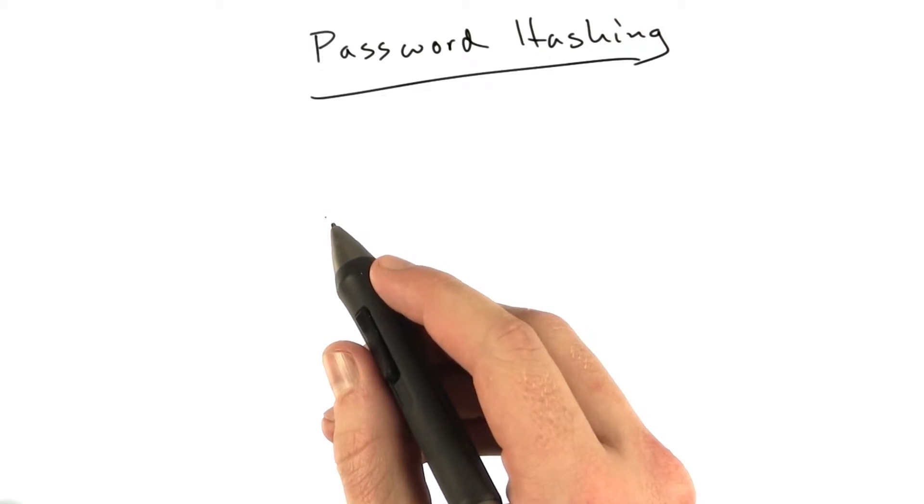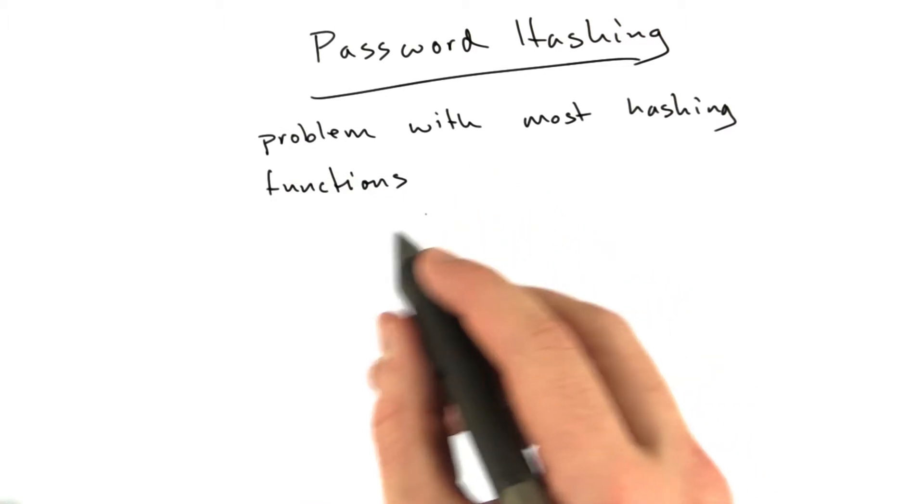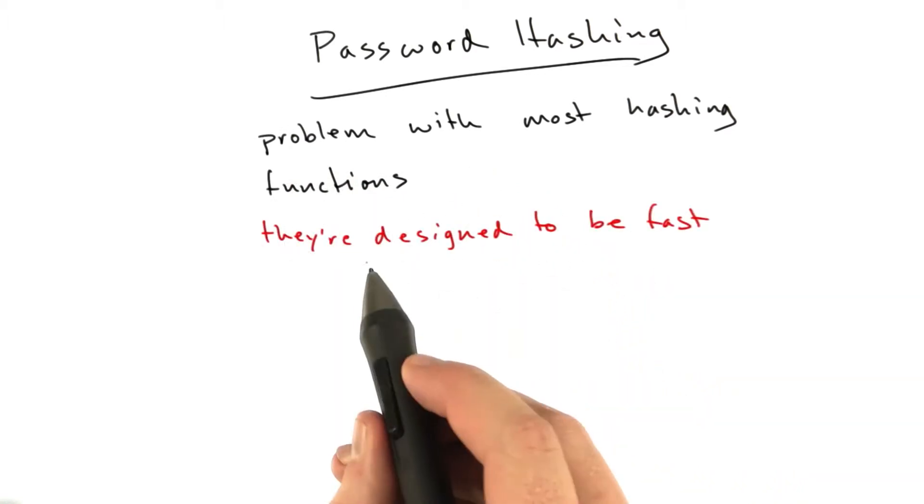Generally, you can use SHA-256. That works okay. The problem with most hashing functions is that they're designed to be fast. So generally, this is a good thing.